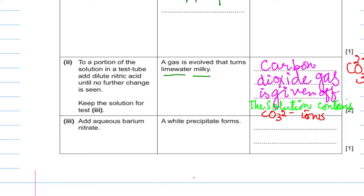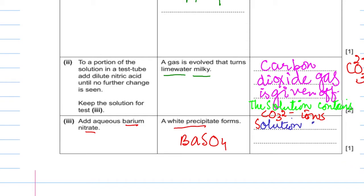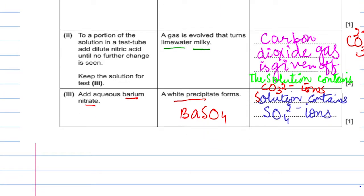Add aqueous barium nitrate — a white precipitate forms. Barium sulfate will form when we add barium nitrate. Always remember: by using barium nitrate, if we get white precipitates, this is a test for sulfate ions. The white precipitate of barium sulfate tells us the solution contains sulfate ions. You have to memorize all of these tests to attempt such questions.